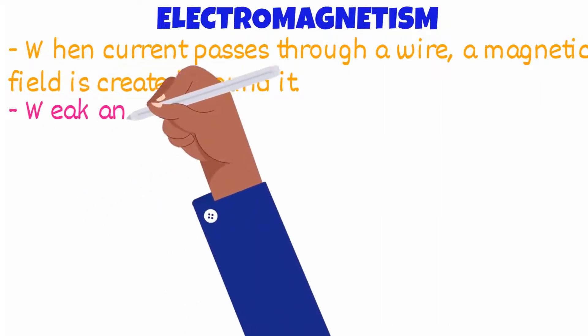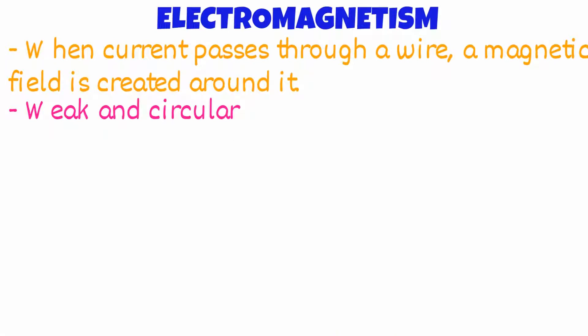This magnetic field will be weak and circular in shape. Here's how a magnetic field around a current carrying wire will look like.